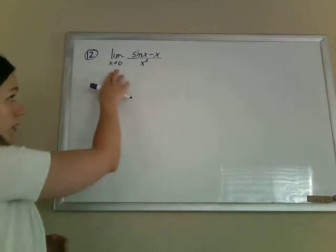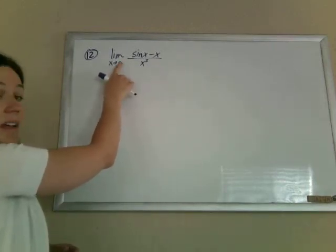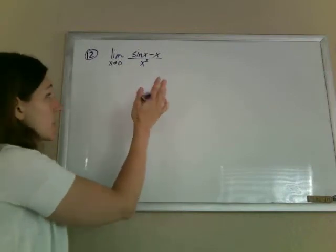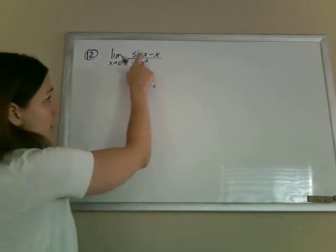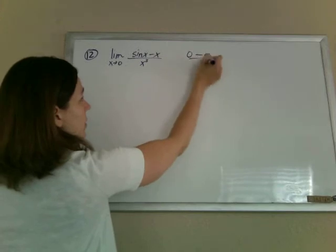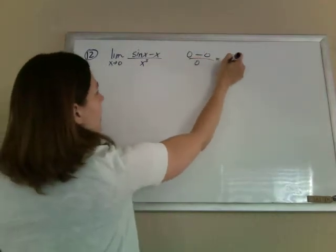Okay, so the first thing you want to do whenever you're looking at a limit is to try to plug in that 0, because sometimes it works. So if we plug in 0, sine of 0 is 0, minus 0, over 0, and this does not work.